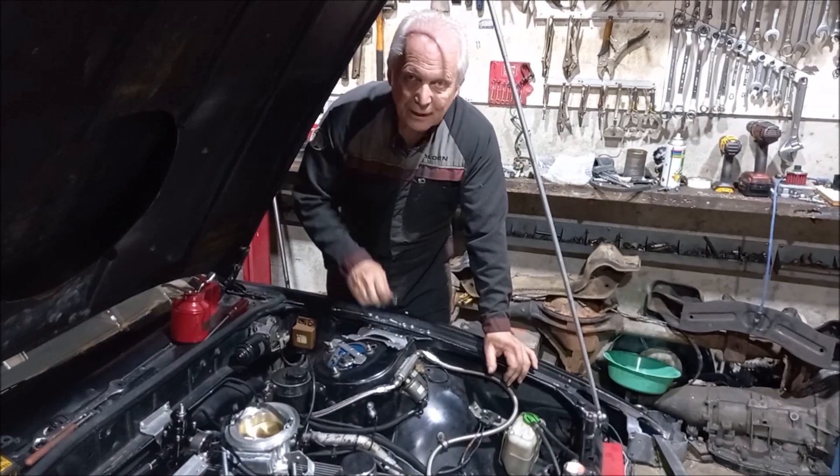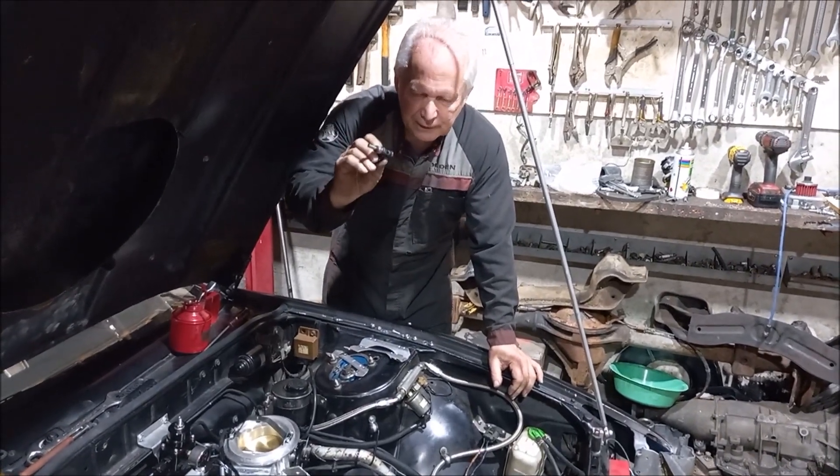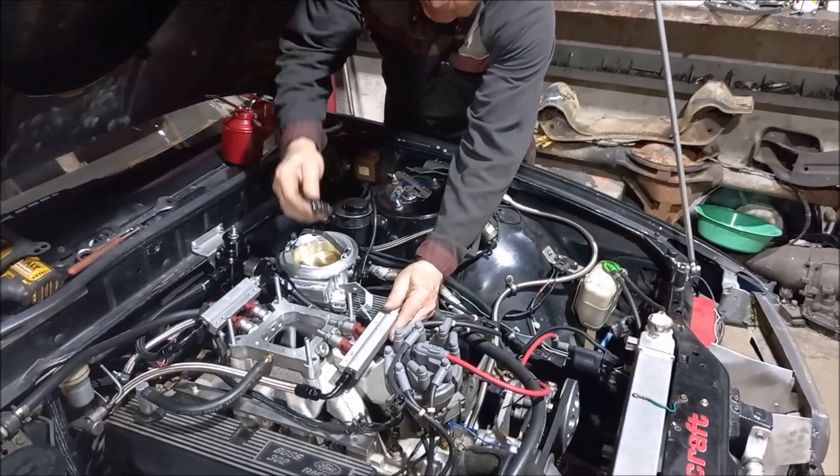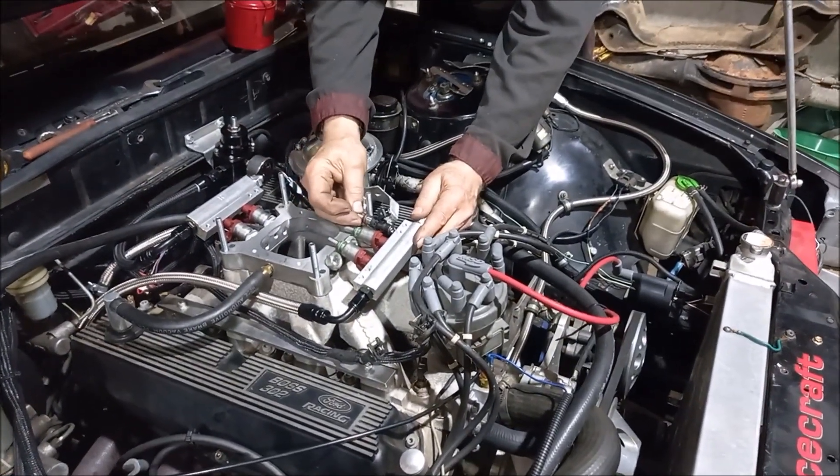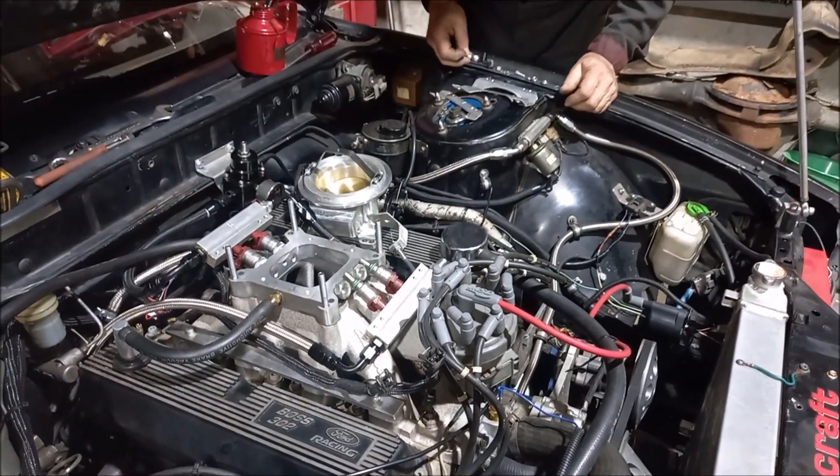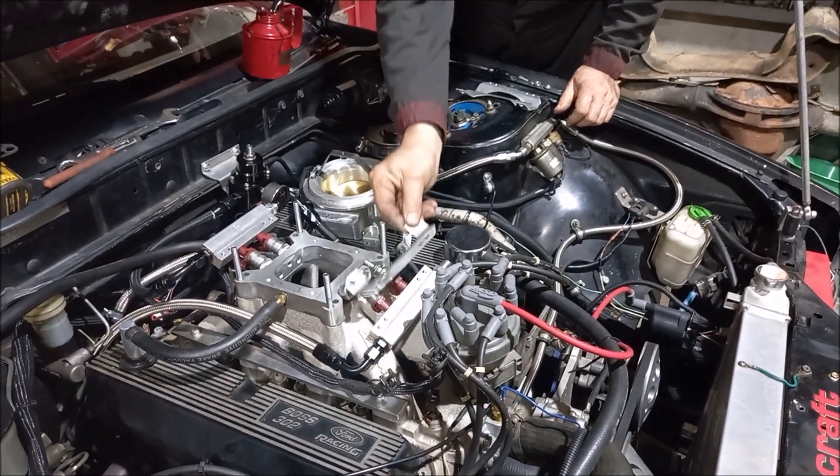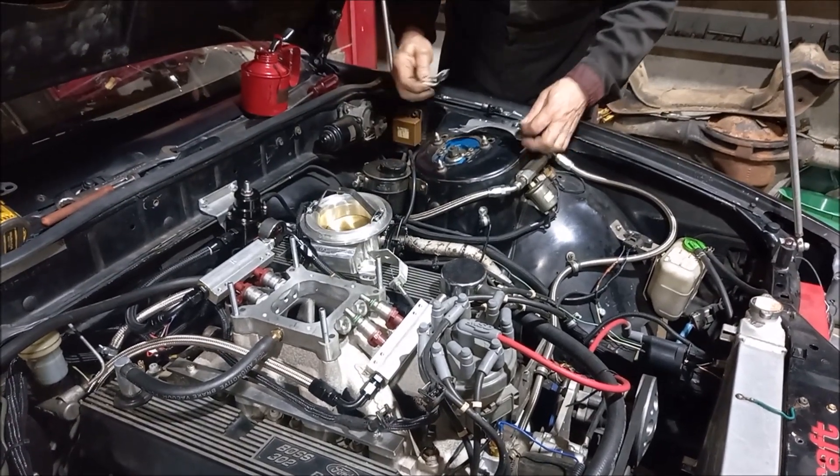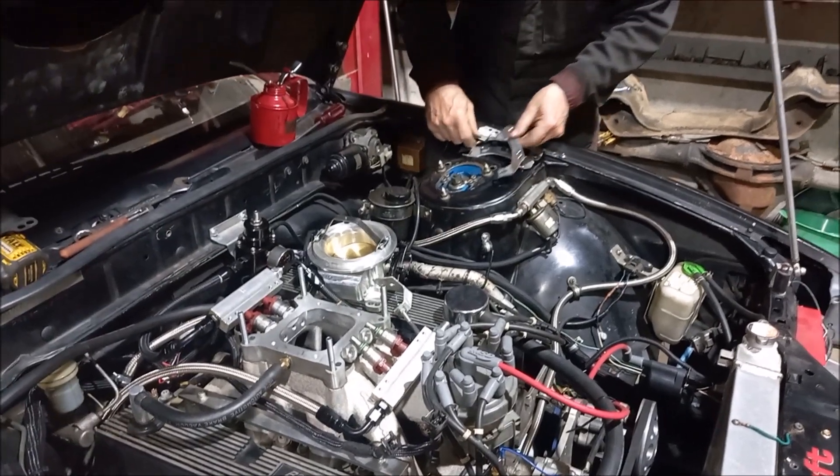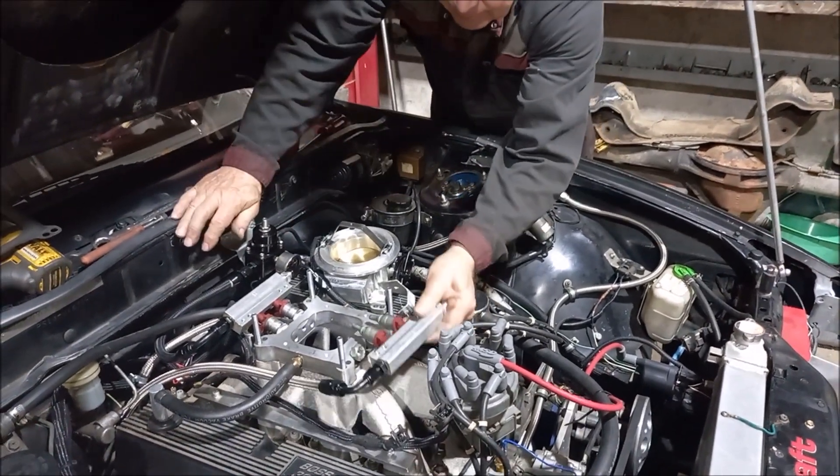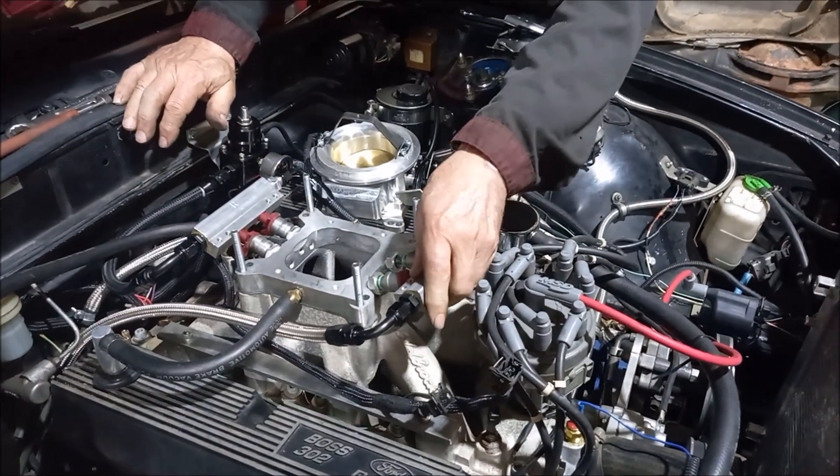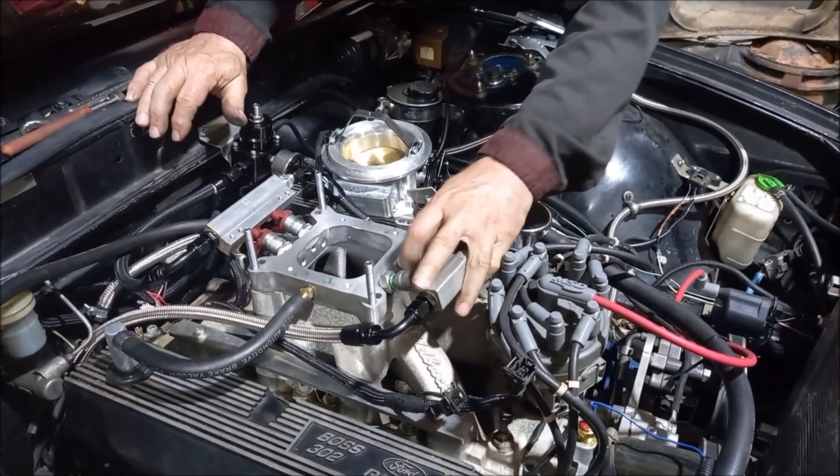All right, so I've pulled out the 1000 cc injectors and I've got these Volvo ones here. The problem I've got is that they're considerably longer than these originals, which of course means that the fuel rail holder doesn't fit anymore. So I've had to make up some longer ones to be able to get them in.